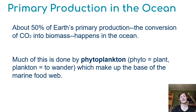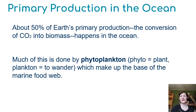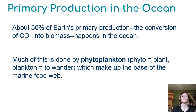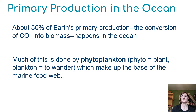Much of that primary production is done by phytoplankton, and it's a really diverse group of organisms. 'Phyto' means plant, 'plankton' means to wander, so these are just wandering photosynthetic organisms in the ocean. There are many different types of algae that are all unrelated to each other, there's cyanobacteria, and there are even some land plants that have moved back into the ocean. Those phytoplankton are going to make up the base of the marine food web.